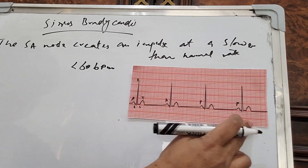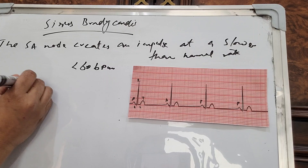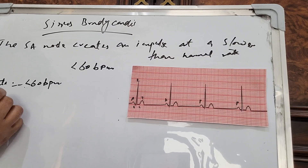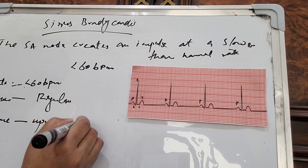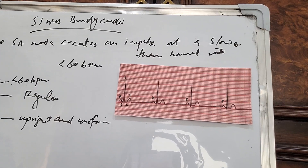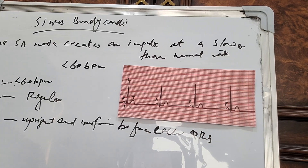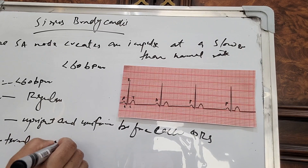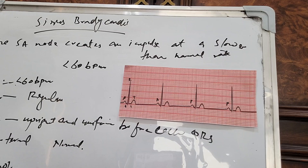If we look at the ECG strip in sinus bradycardia: the rate, as I told you, is less than 60 beats per minute. Rhythm is regular. P wave is upright and uniform before each QRS. PR interval is normal. QRS complex is also normal.